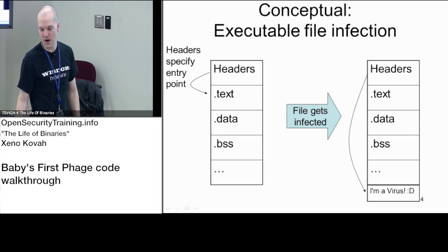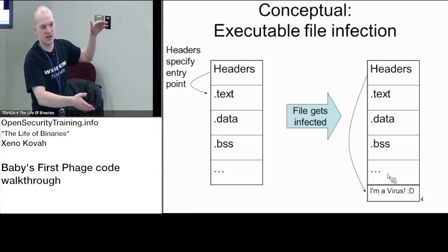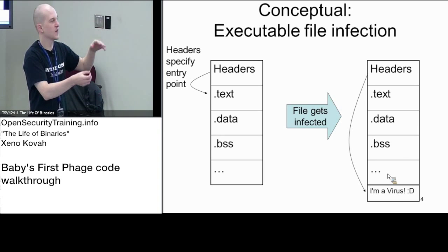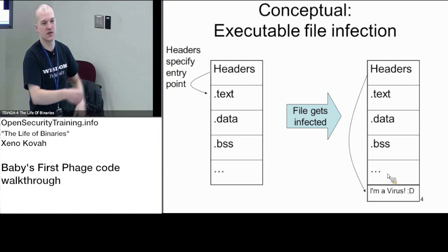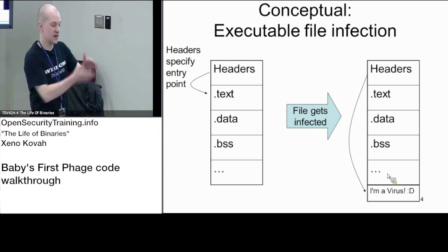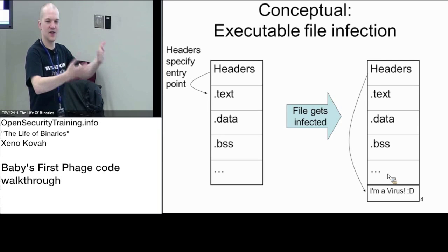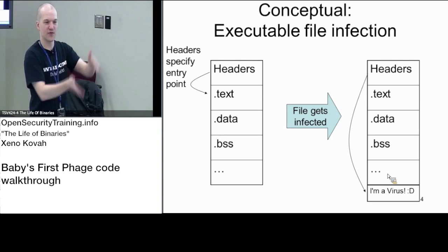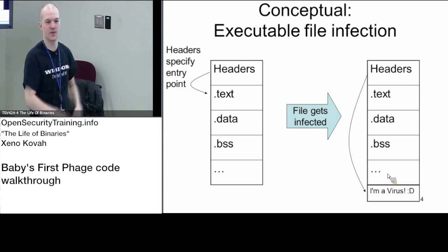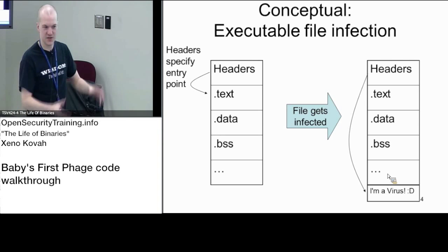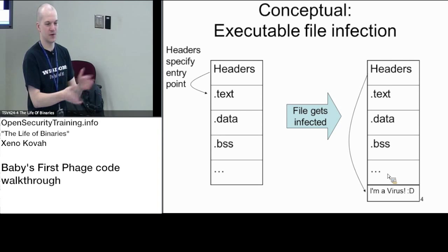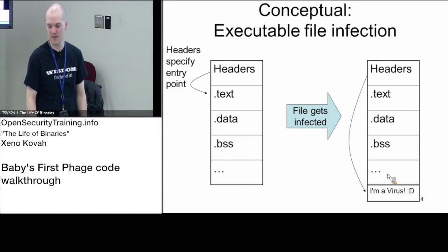I expanded the last section to give space to tack the virus on there, then changed the header information accordingly. If I didn't expand that last section my virus would never get mapped into memory — we're back to PE files. You have to have a section to map from file into memory; if I just tacked it on to the end the OS loader would never pull my virus code with it.